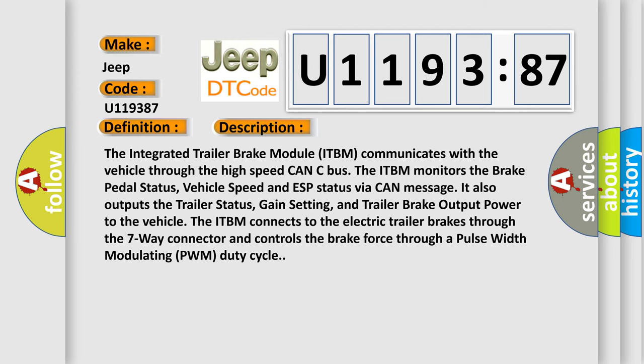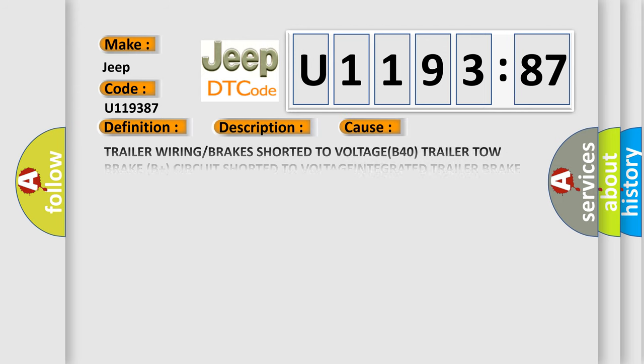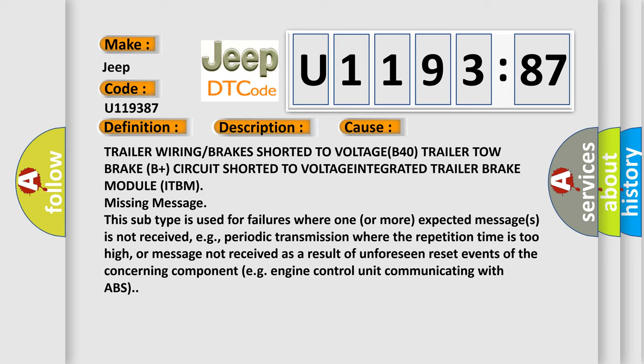This diagnostic error occurs most often in these cases: Trailer wiring or brakes shorted to voltage (B40), trailer tow brake B-plus circuit shorted to voltage, Integrated Trailer Brake Module (ITBM) missing message. This subtype is used for failures where one or more expected messages is not received, for example, periodic transmission where the repetition time is too high, or message not received as a result of unforeseen reset events of the concerning component, e.g., engine control unit communicating with ABS.